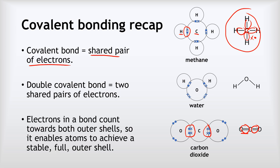Now covalent bonding works because the electrons in the shared pairs count towards both atoms' electron counts. So this oxygen, for example, has eight electrons in its outer shell now because it's got those two shared pairs with the hydrogens.